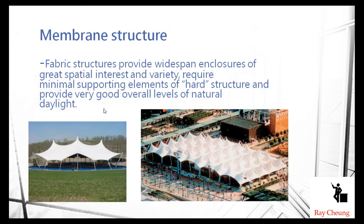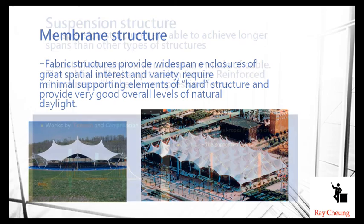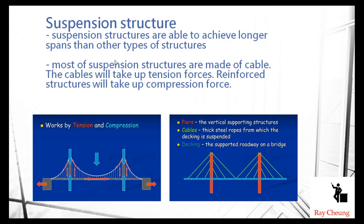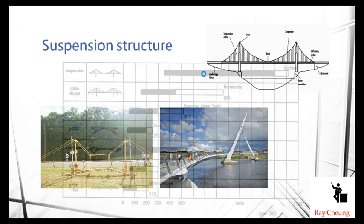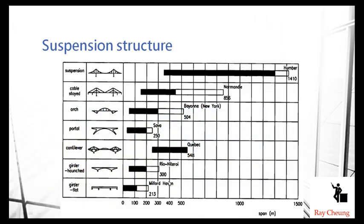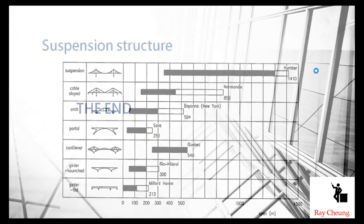Nowadays architects are also considering membrane structures. They have a different form — they use a steel frame but on top they use fiber, giving the building a different look. Another type is the suspension structure, which you can also see in many applications. Nowadays architects try to incorporate this layout inside buildings to make them more special and elegant. The span can be much longer and higher. Thank you.